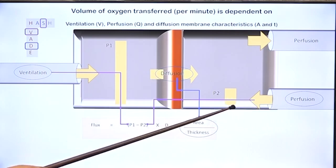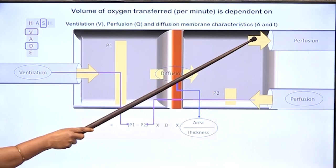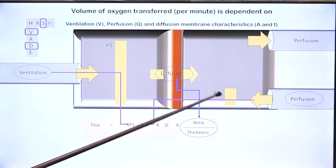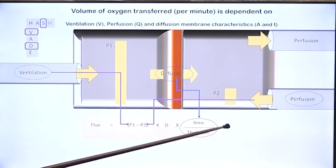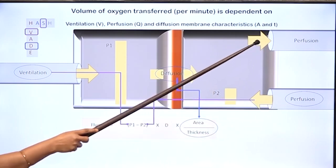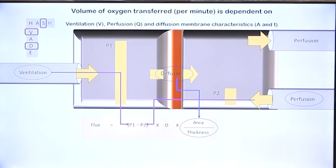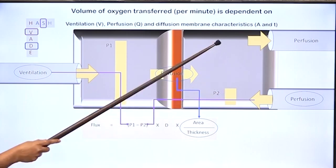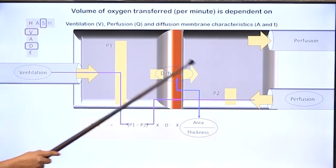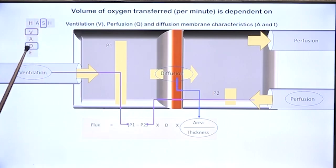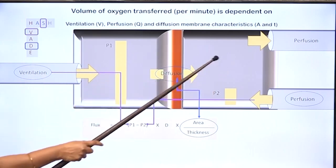If perfusion is impaired, blood remains for a longer time in the capillary, by which time P2 would have already reached P1 and diffusion would have stopped. The amount of blood coming in per unit time is less and therefore the amount of oxygen carried out per unit time is less — that is stagnant hypoxia. Because blood remains longer, there is enough time for P2 to rise to P1 levels, and therefore there is no arterial hypoxia in perfusion impairment, whereas in ventilation impairment and diffusion impairment there is arterial hypoxia.